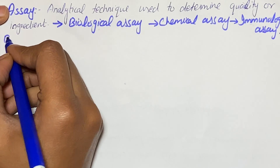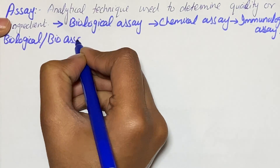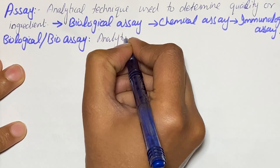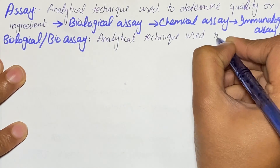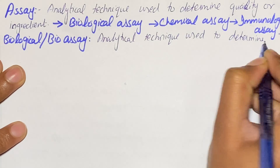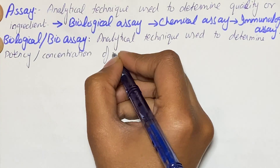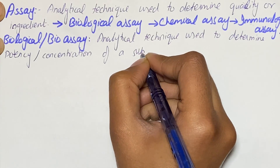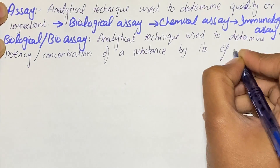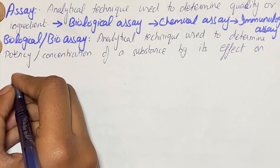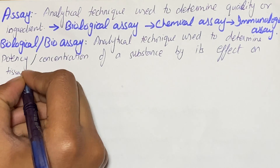Biological or bio assay is actually an analytical technique which is used to determine potency or concentration of a substance by its effect on a living tissue or living cell. As there is involvement of living tissue or cell, it is called bio assay because there is something living involved in this kind of assay.